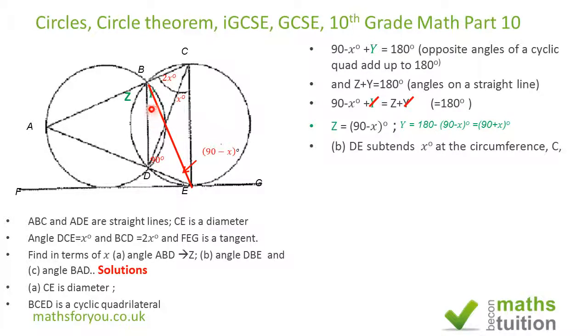The same chord subtends the angle there, so the same chord would therefore subtend an angle of x degrees there as well. So angle DBE is x degrees, as we're supposed to find.